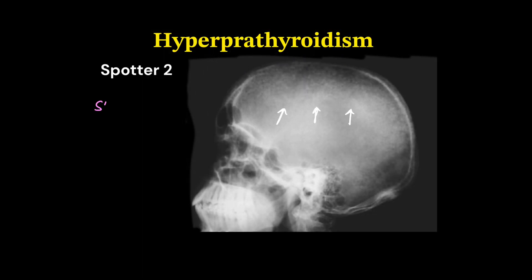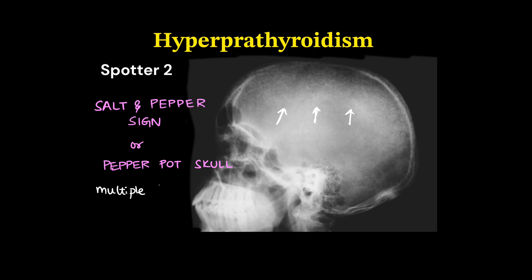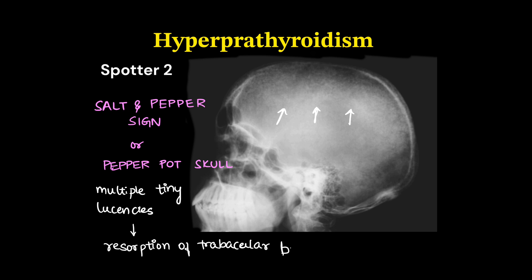This is a lateral skull X-ray showing a case of hyperparathyroidism. It shows the salt and pepper sign, also called pepper pot skull — that is, multiple variable-size tiny lucencies or lytic lesions throughout the skull. This is because of resorption of trabecular bone.